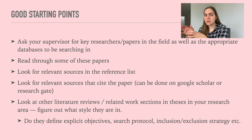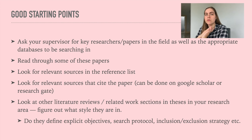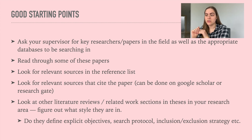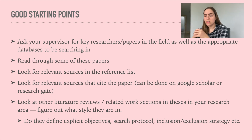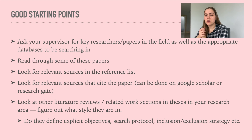Is it a more systematic review or a more traditional literature review that just aims to provide an overview? That depends on your field — in computer science it's more of a traditional related-work section, whereas in health and medical sciences it could be a systematic review. Figure out whether they define explicit objectives, a search protocol, inclusion/exclusion strategy — and if you're unsure, ask your supervisor how things are traditionally done in your field.